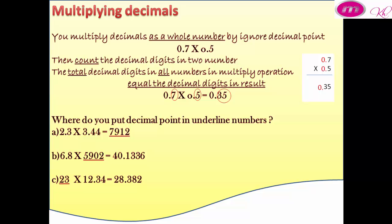For number A, the first number has one decimal digit and the second number has two decimal digits. The total is three decimal digits, so the result will be 7.912.